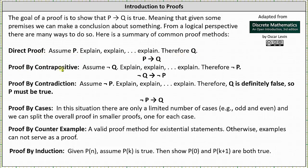Next we have proof by contrapositive. For this type of proof we assume not q, explain, explain, explain, therefore not p. Proof by contrapositive takes the form of if not q then not p.